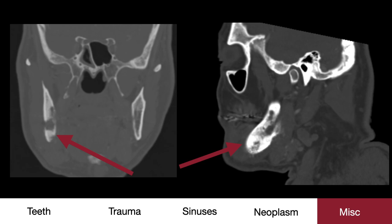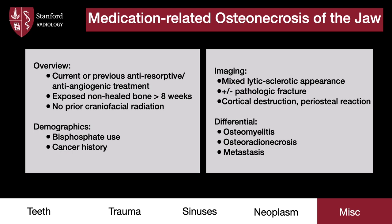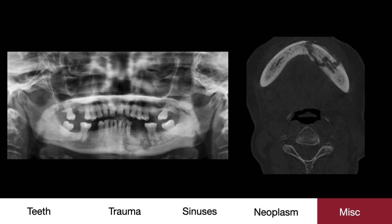The CT further highlights the mixed lytic-sclerotic appearance with cortical destruction characteristic for osteonecrosis. Medication-related osteonecrosis of the jaw requires specific criteria: first, a history of an anti-resorptive or anti-angiogenic medication — bisphosphonate use is the most common; next, exposed non-healed bone for more than eight weeks; and third, no prior craniofacial radiation, which can mimic this entity. It is important to keep this diagnosis in the differential for patients with a history of cancer previously treated with bisphosphonates. The presence of a pathologic fracture needs to be identified. The differential includes infection with osteomyelitis, metastases, or osteoradionecrosis. Note how the entire mandible is sclerotic, and there is a clear pathologic fracture on both the panorex and CT.